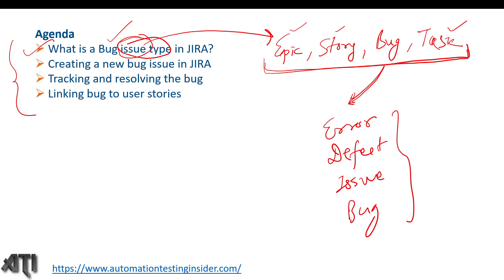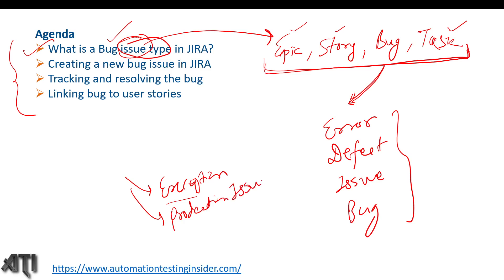The bug issue type is not limited to testers only. Developers can also use it — for example, if they are getting some exception in their application and want to fix it, they'll use this bug type. Additionally, if there's any production issue, we can also use the bug type of issue in Jira.